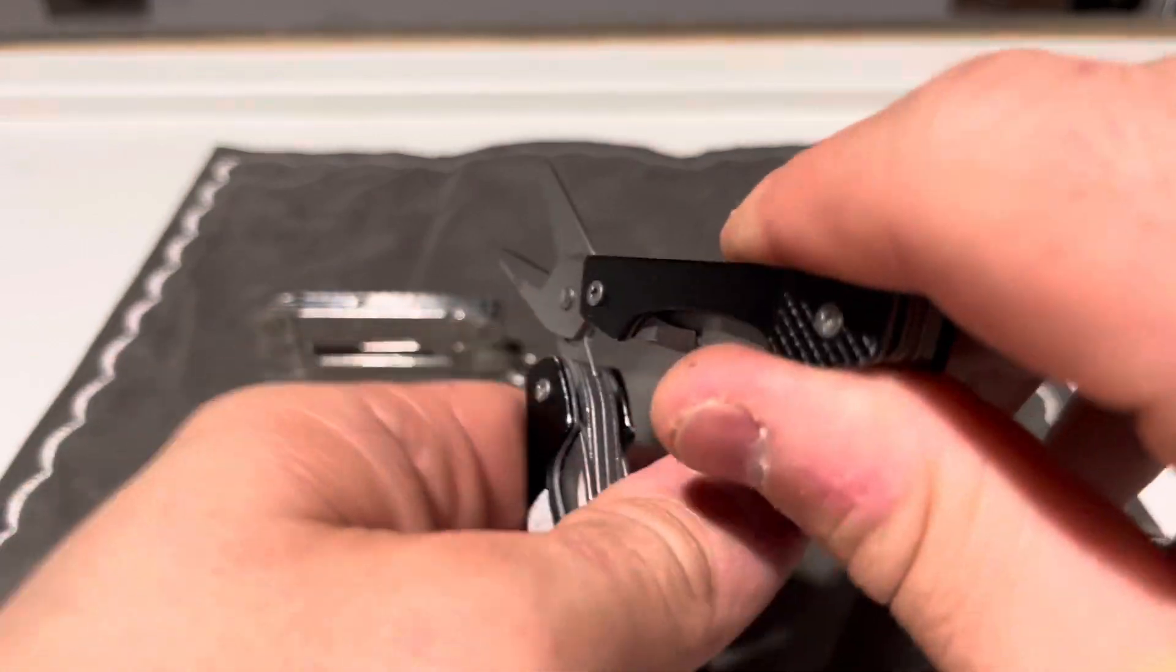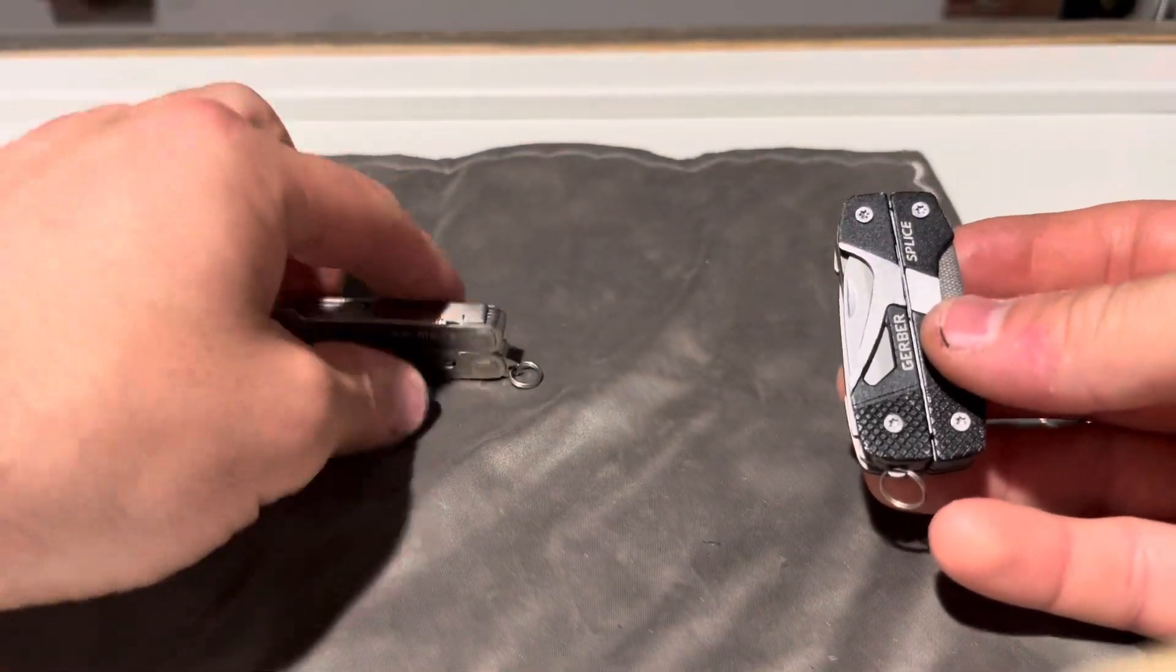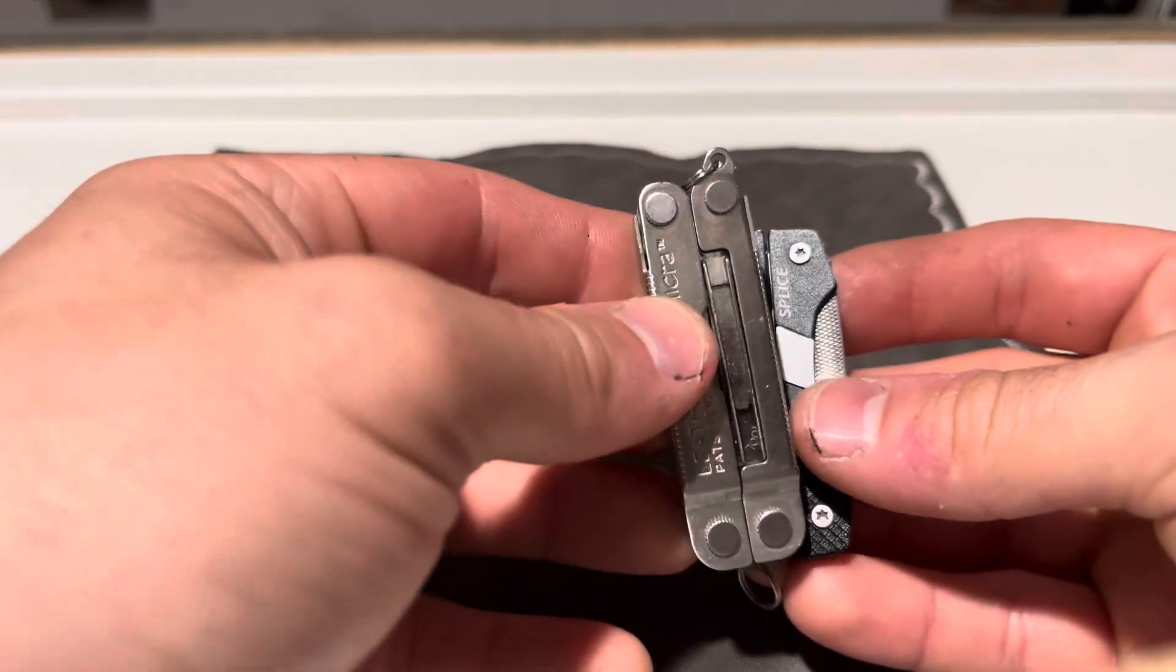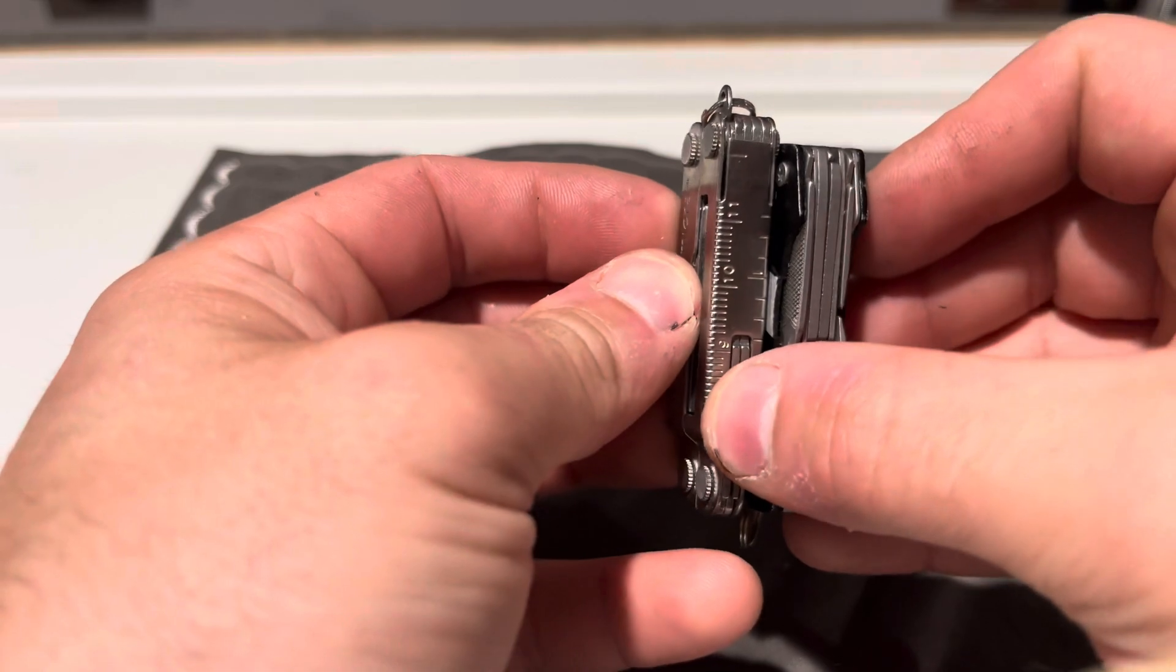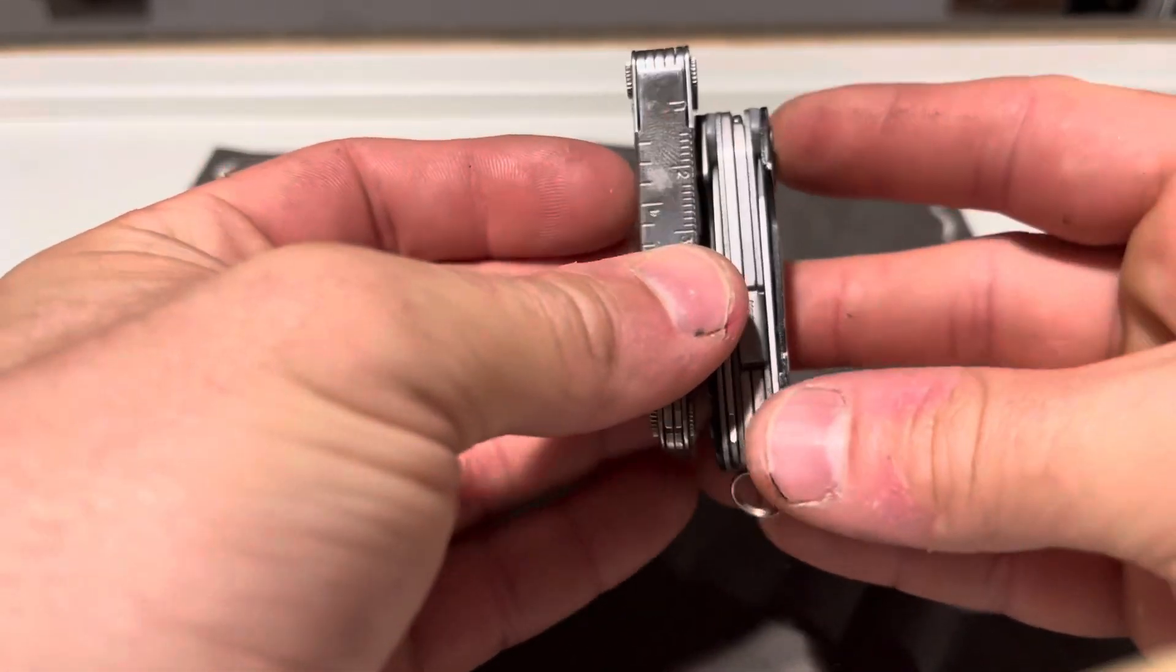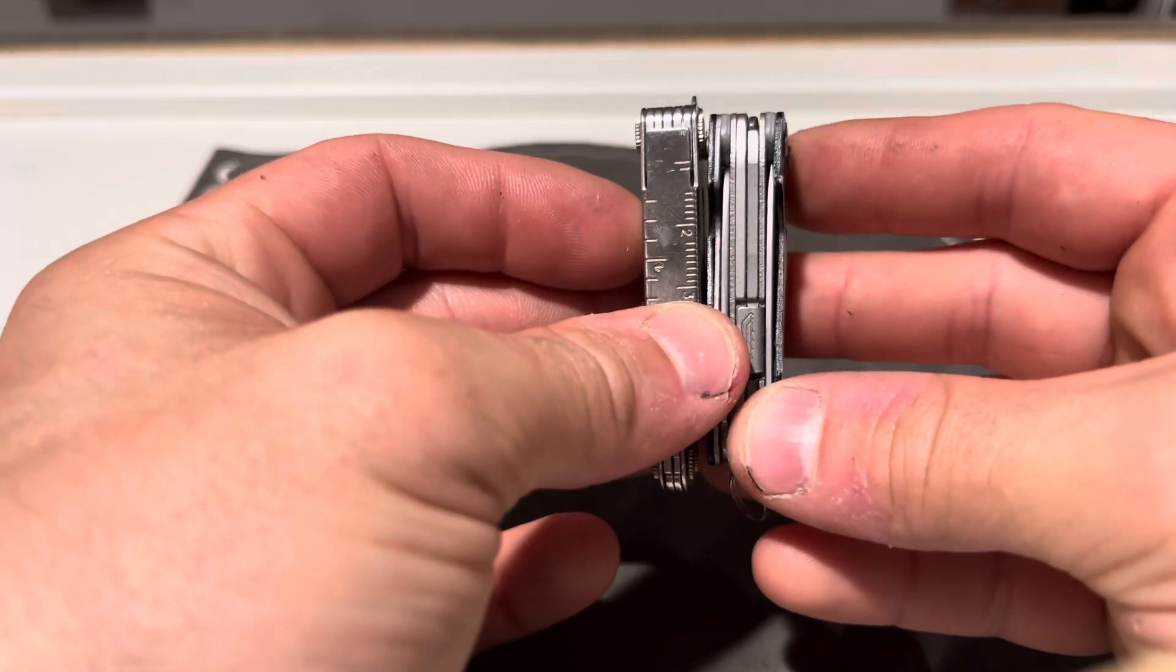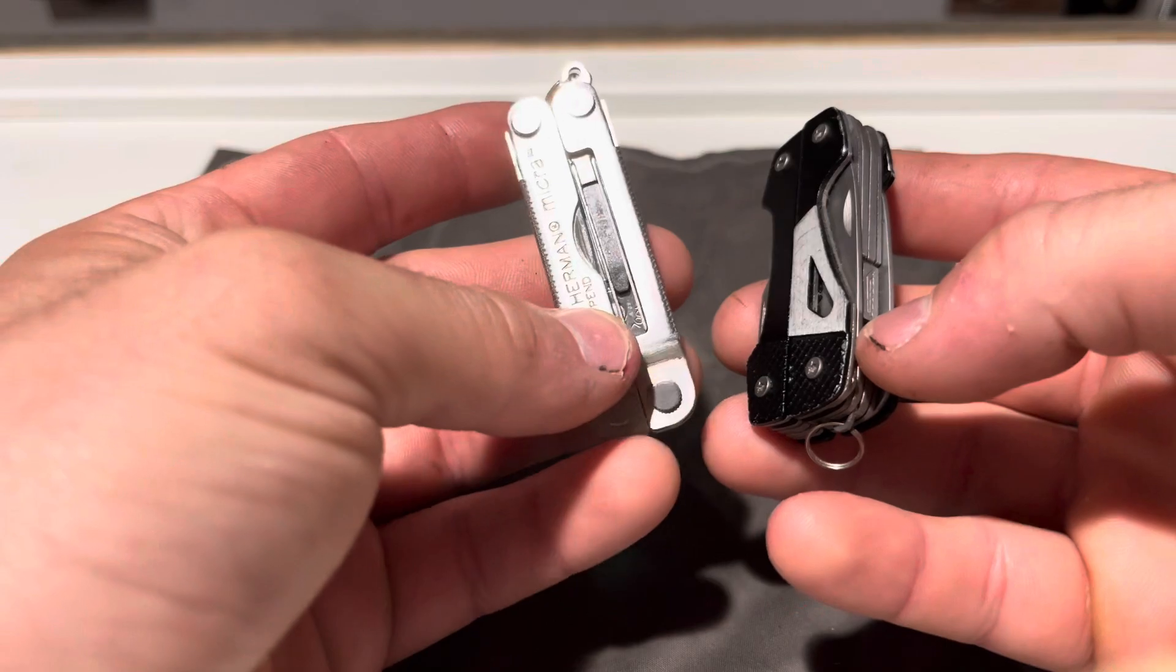So in comparison, I brought it up to the Leatherman Micra. The Micra is slightly longer than the Gerber splice and when it comes to thickness, the splice is just a hair thicker than what the Leatherman Micra is.